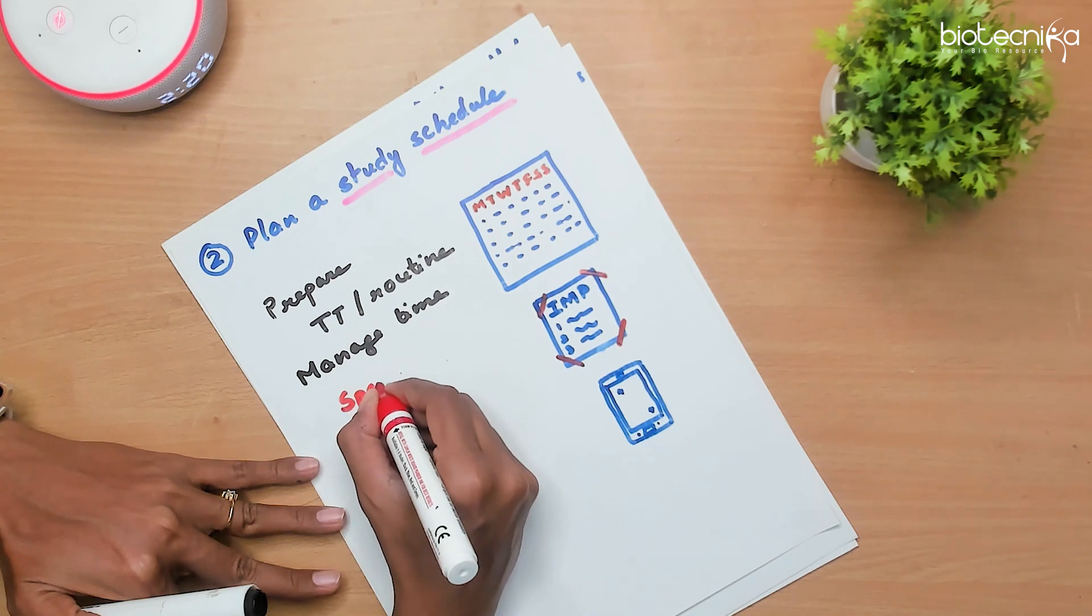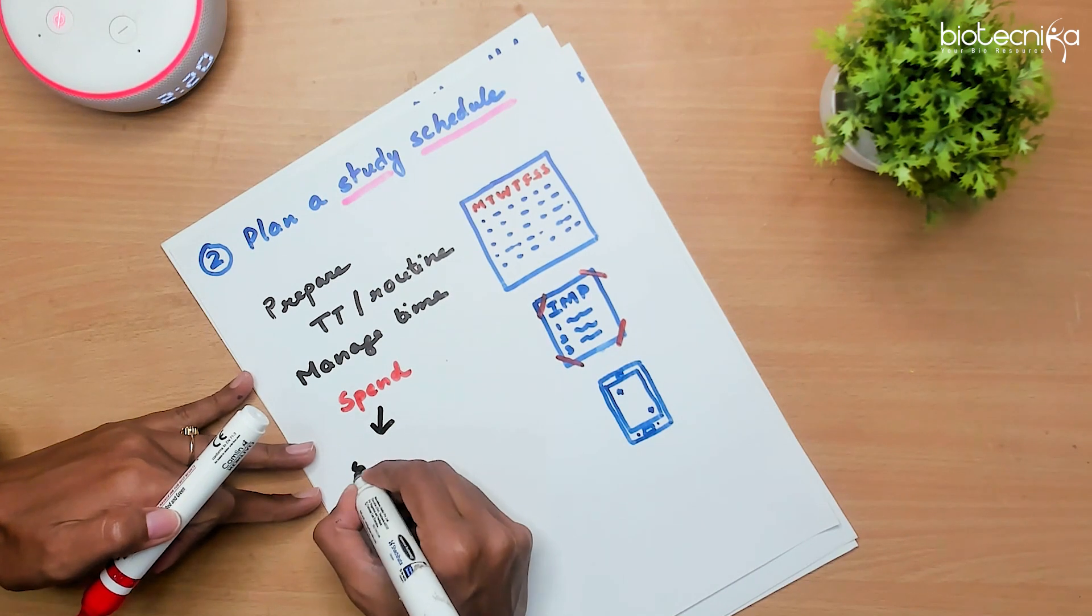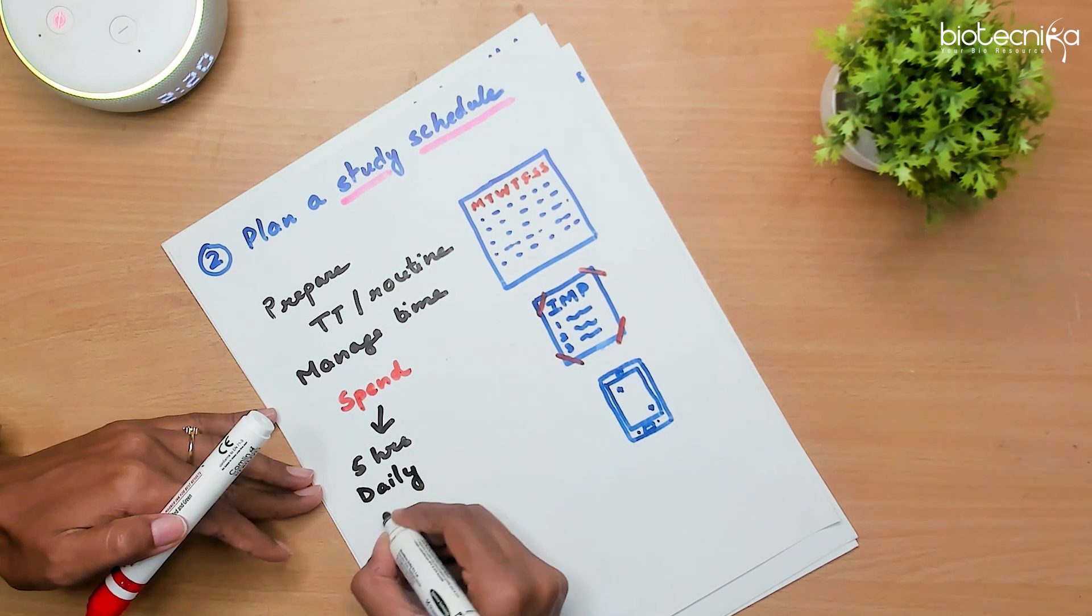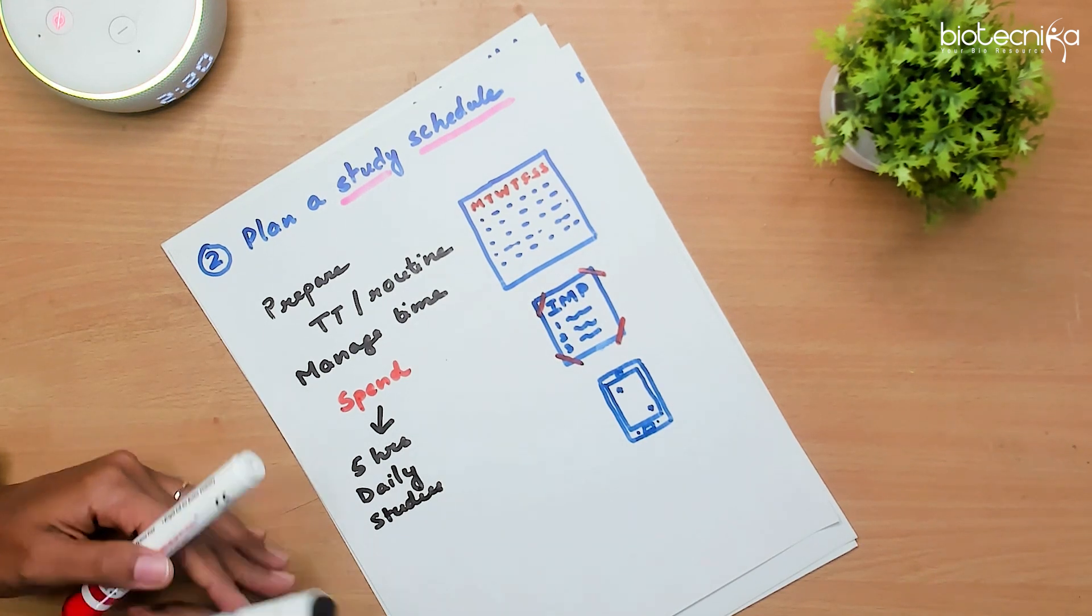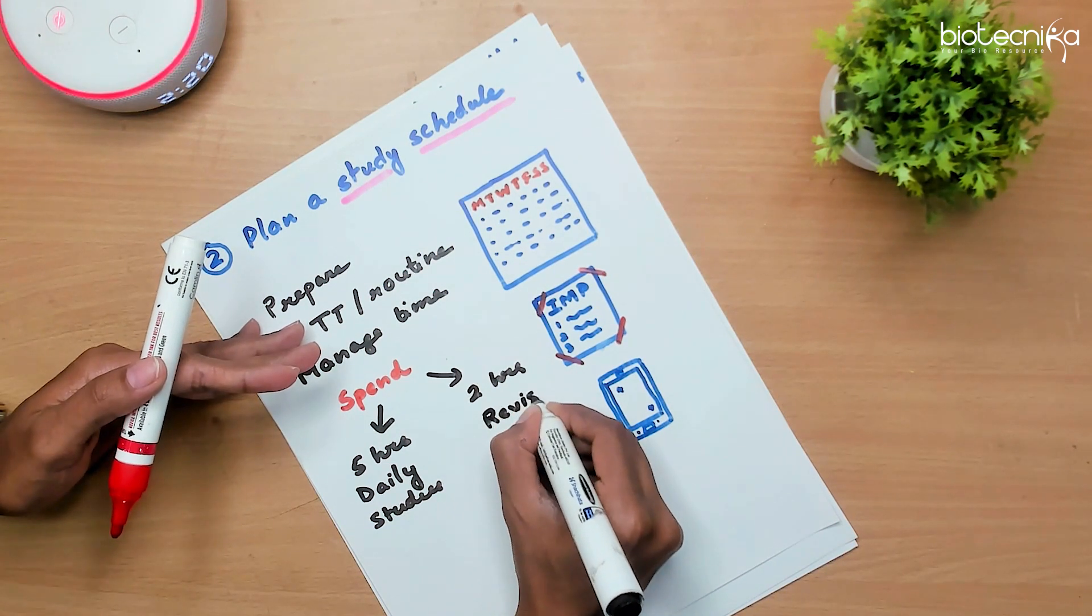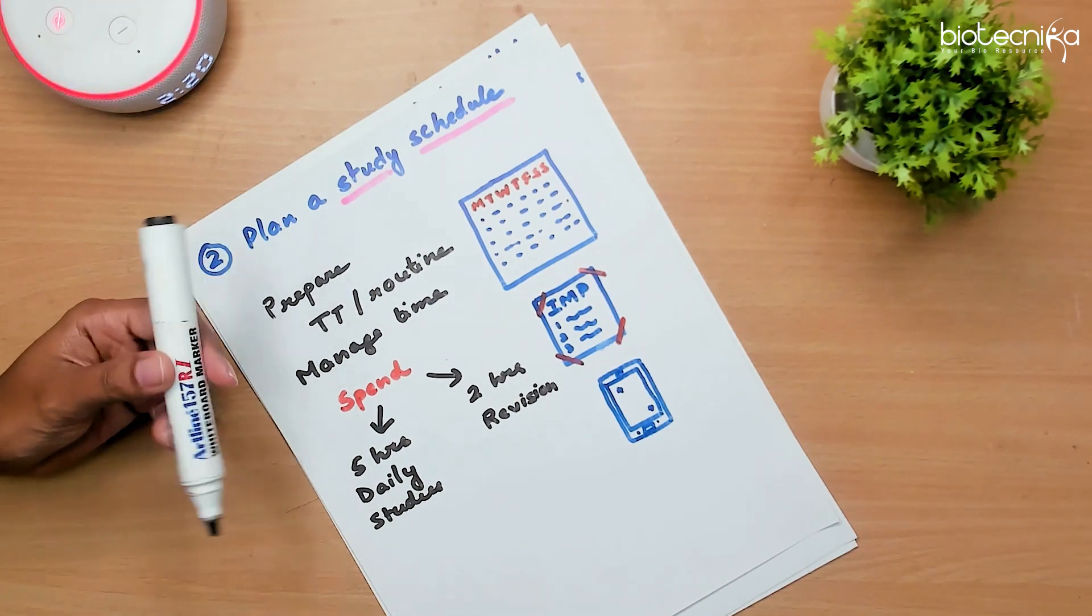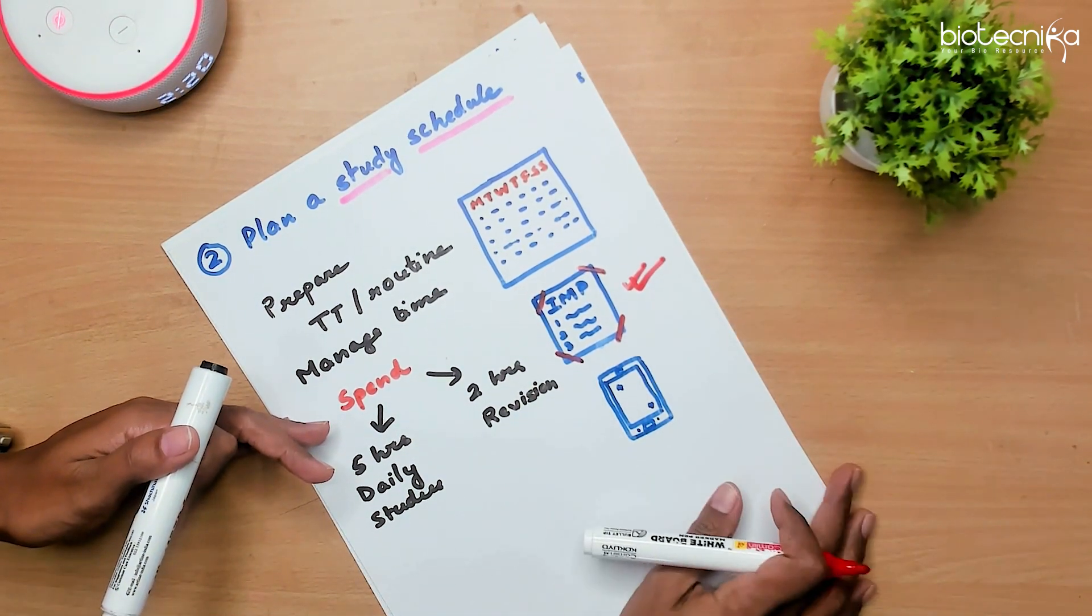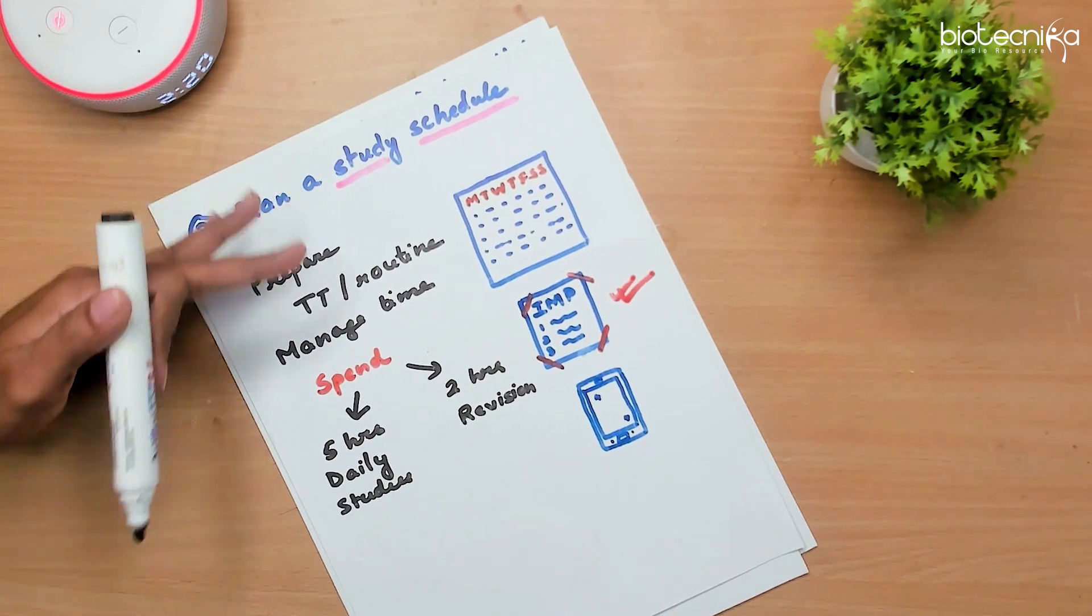So question is how much time should you spend for studies every day? Well, ensure that you at least study five hours for your daily topics, for new topics, for things which you haven't studied before or which are complicated. Keep an additional two hours only specifically for revision. Whatever you have studied in a day, you must go through that. Another point is the plan schedule should also contain a checklist of which topics you are completing, which topics are left, which topics you have to revise again.